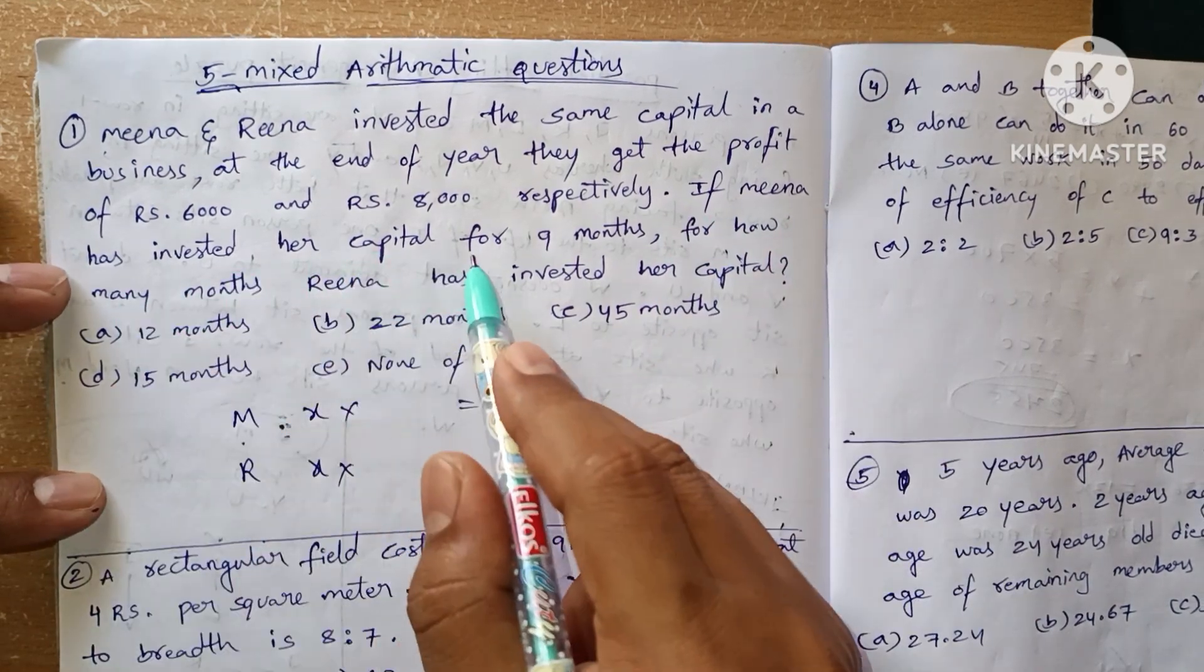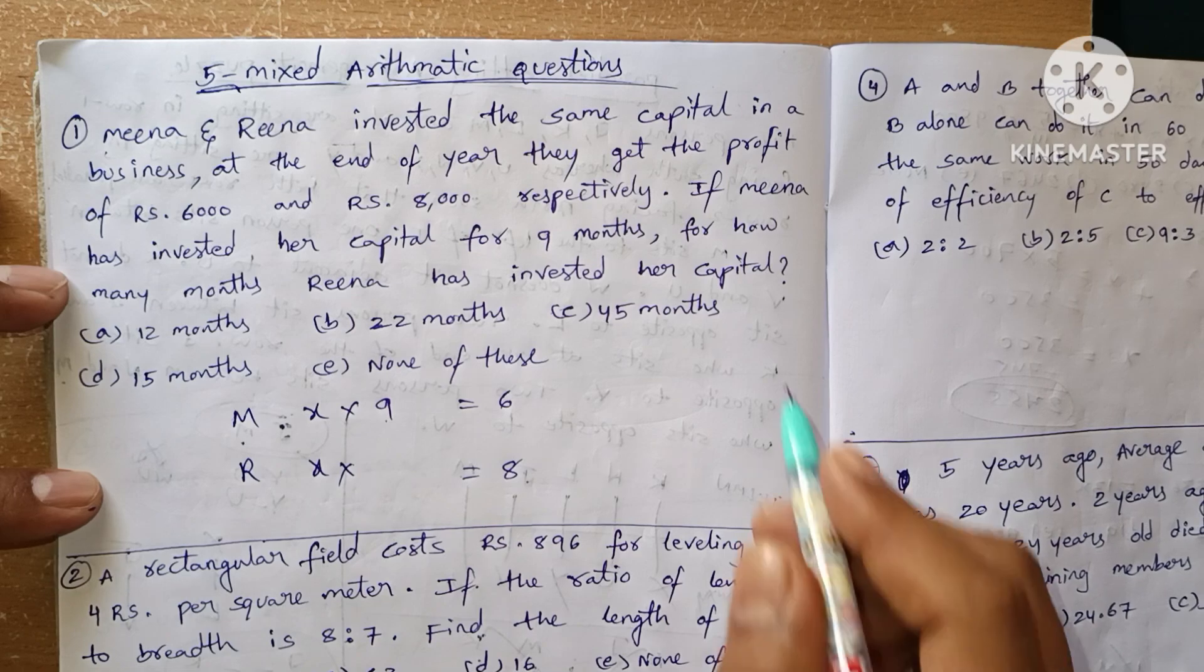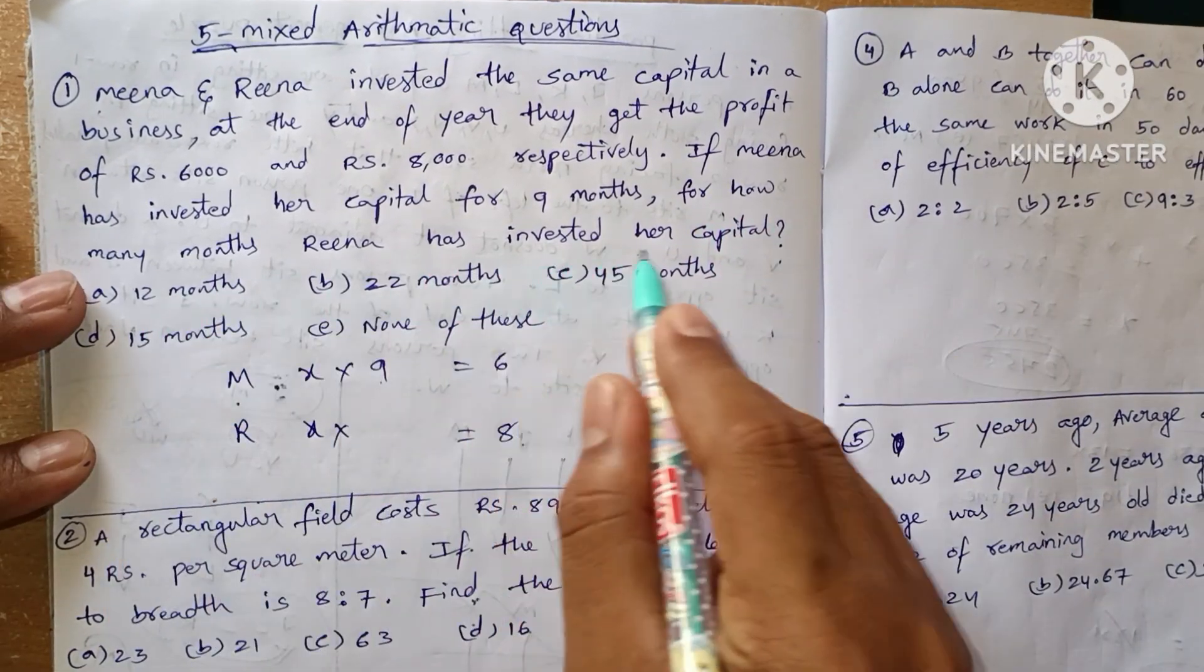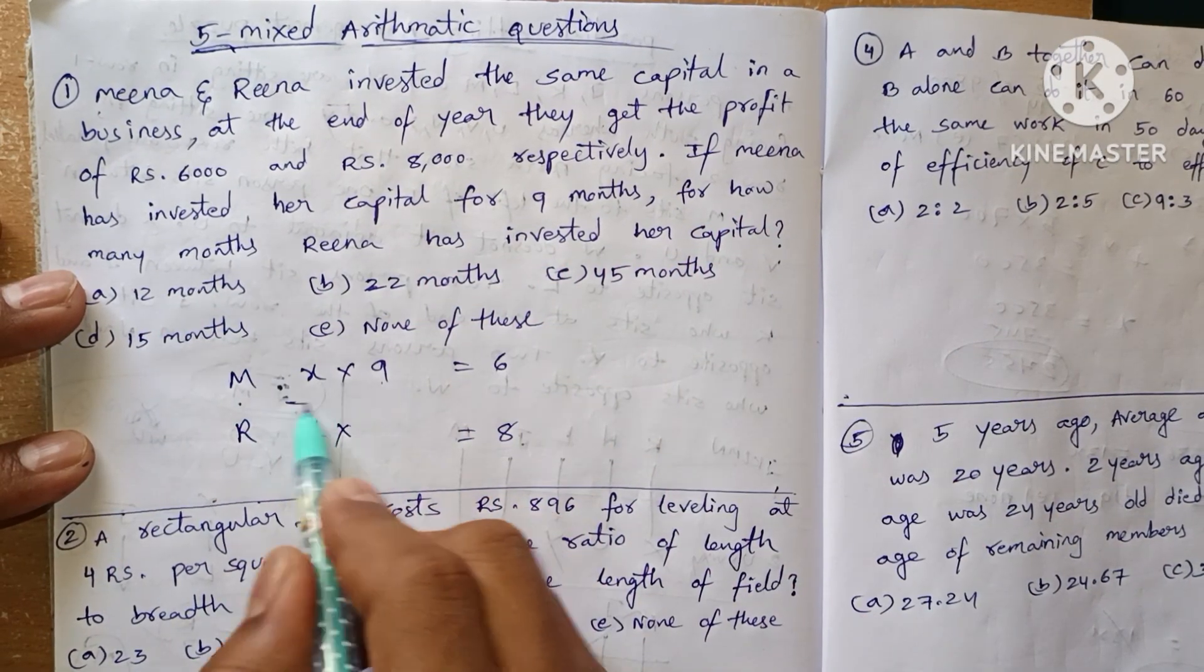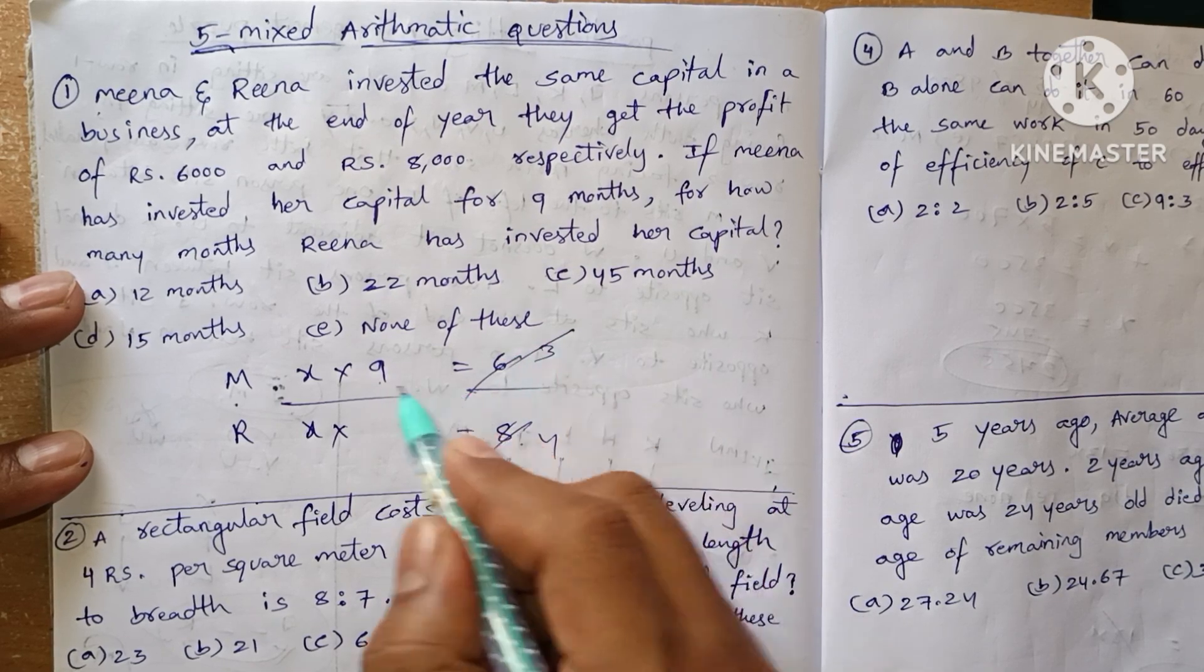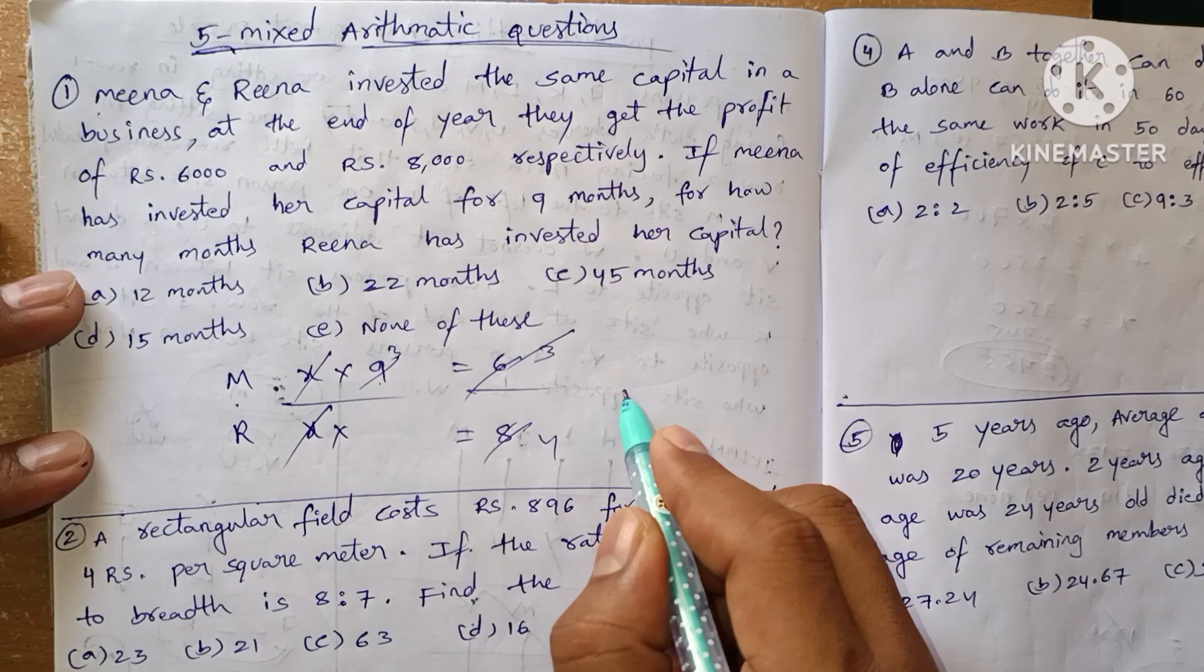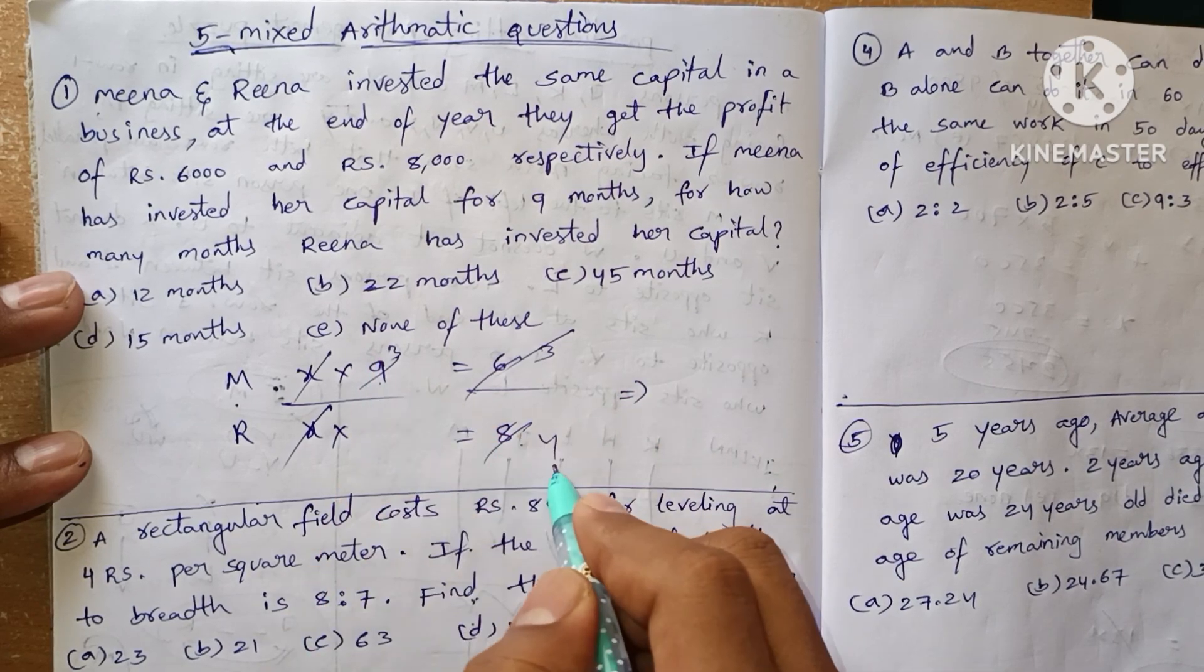If Mina has invested her capital for nine months, for how many months has Rena invested her capital? Let's see: this is three times and this is four times, three times. So this and this cancels, we have 3 × 4 which is 12.